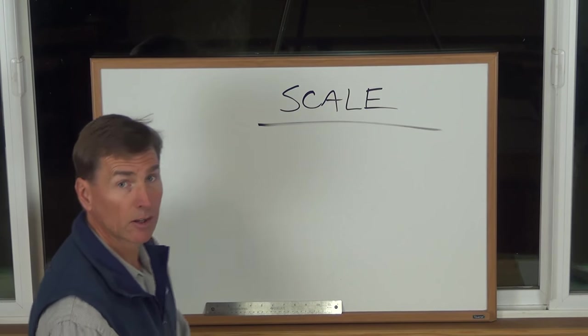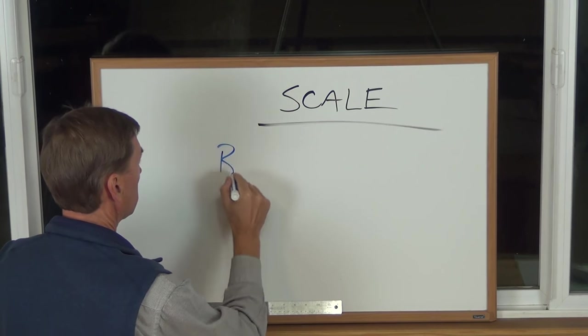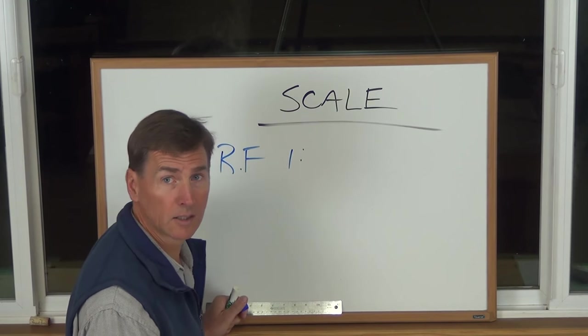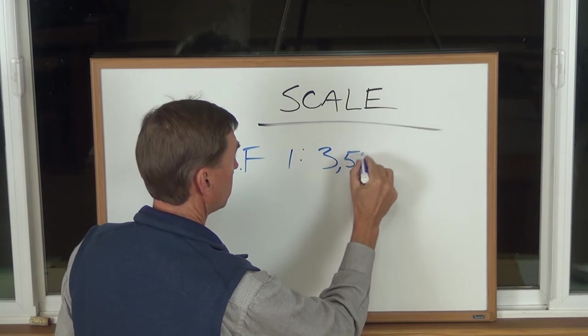Okay, so it had what is known as a representative fraction or RF for short. And the number was one colon three million five hundred thousand.